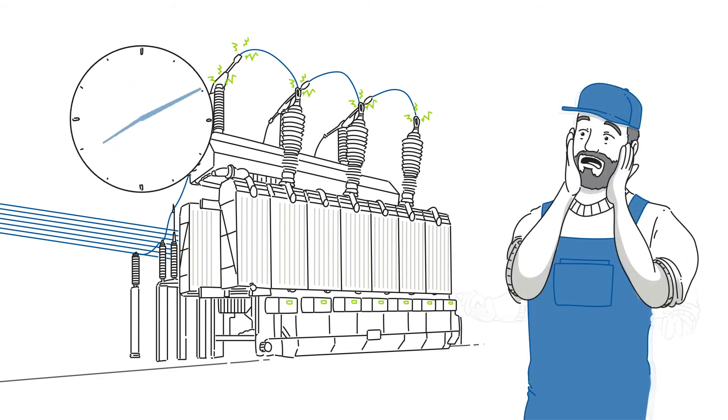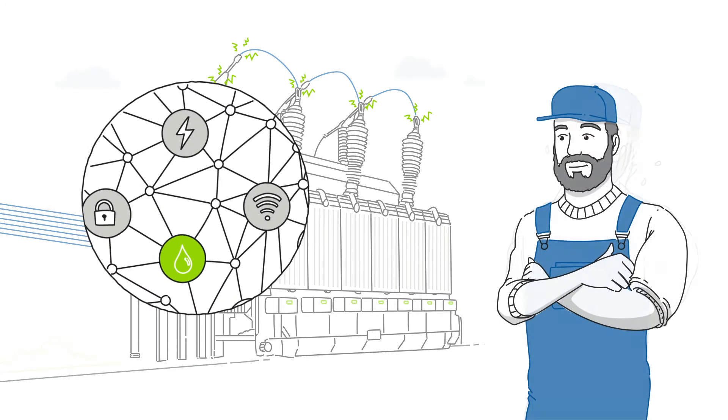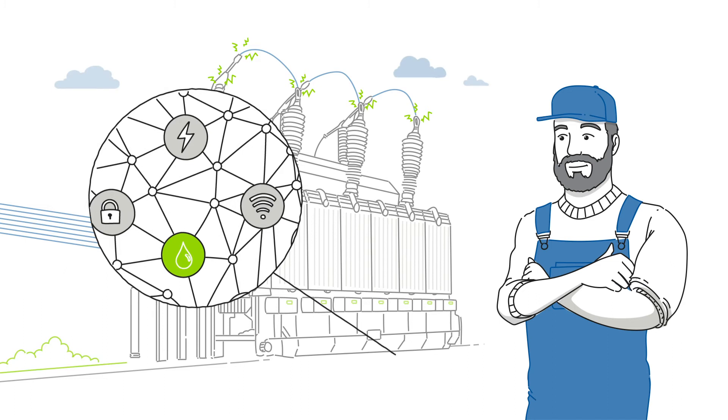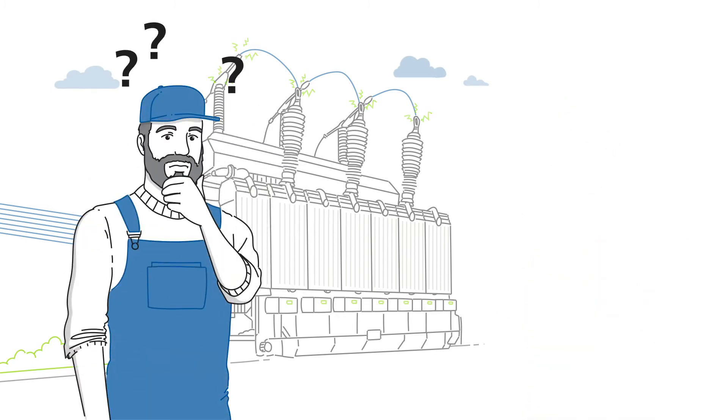Repair and downtimes are an energy supplier's personal nightmare. Ensuring network reliability means to look at every component. Insulating oil is one of them.